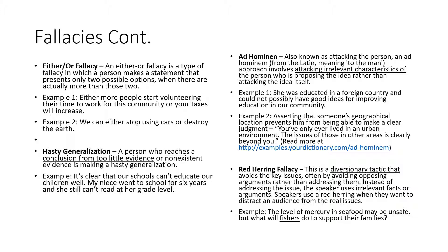A hasty generalization is when a person reaches a conclusion from too little evidence or non-existent evidence. The example used is: 'It's clear that our schools can't educate our children well — my niece went to school for six years and she still can't read at her grade level.' There may be many other reasons for that. You're making a big jump to state that schools can't educate children well. That is a fallacy — there might be many other reasons for this person's niece not being able to read at her grade level.